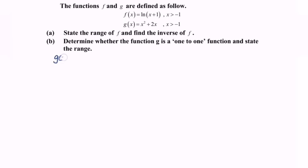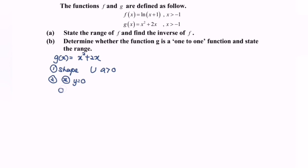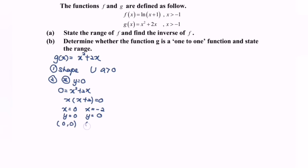Given g(x) is equal to x squared plus 2x. First, the shape: since the coefficient a is greater than zero, the shape is a u-shape, meaning we will have a minimum point. Next, finding the x-intercepts by setting y equal to 0: 0 equals x squared plus 2x, which factors to x(x + 2) equals 0. So x equals 0 and x equals negative 2, giving points (0, 0) and (negative 2, 0).